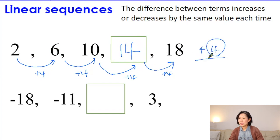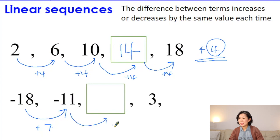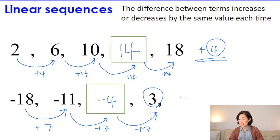The next one: you've got minus 18 and minus 11. What's the difference between the two negative numbers? It's 7. So the numbers increase by 7. Minus 11 add 7 gives you minus 4. Let's double check — if you add 7 to minus 4, that gives 3. That's why the number sequence increases by 7.